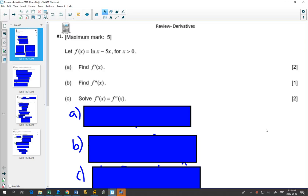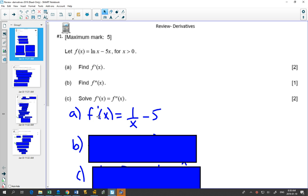So exam question. This was a calculator question. Maximum mark 5. If f of x is the natural log minus 5x for x greater than 0, they're telling us that just because natural log of x is not defined when x is negative.